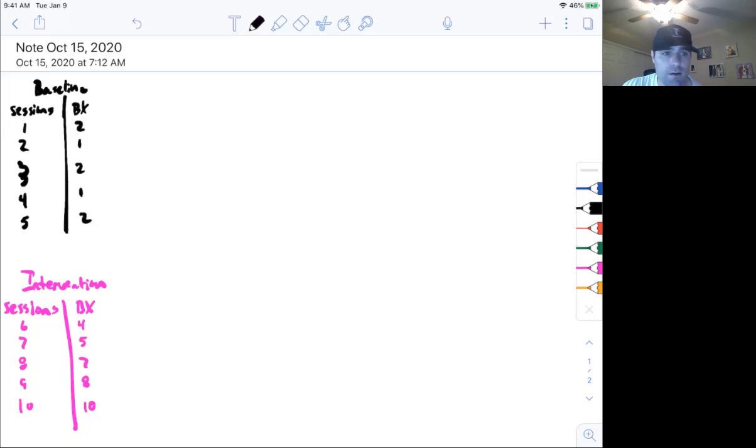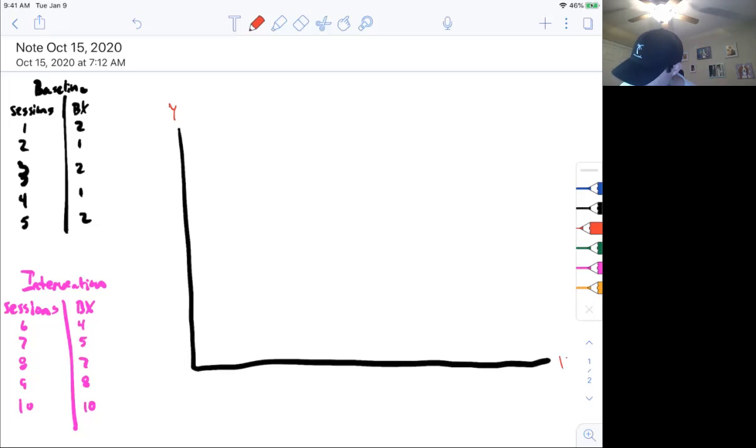All right, so now you have your data. All you do here, plug it in to a line graph. Very simple, right? So our line graph, this is the y-axis, this is the x. Behavior goes here. Time goes on the x-axis. In our case, this is sessions. Let's follow that rule, all right?